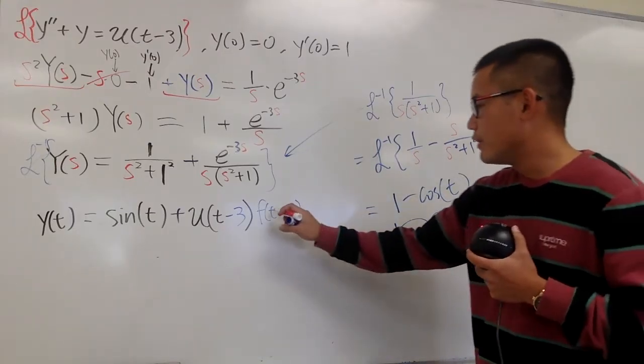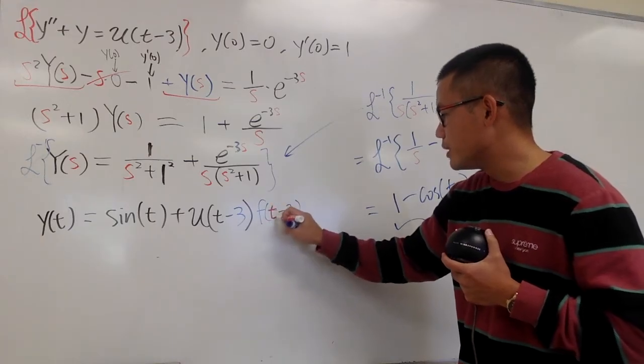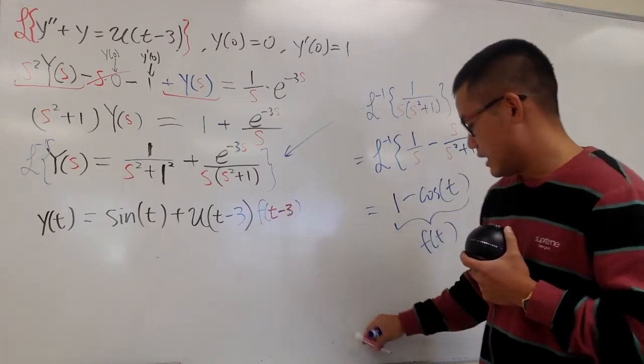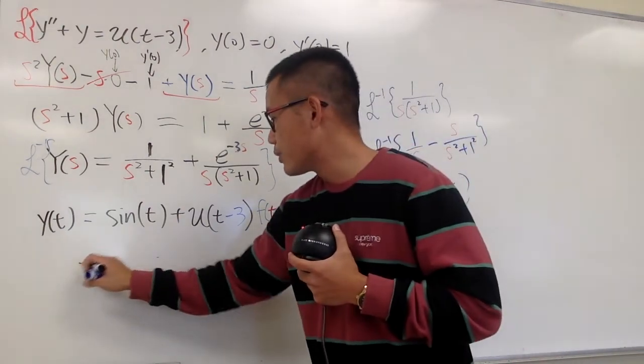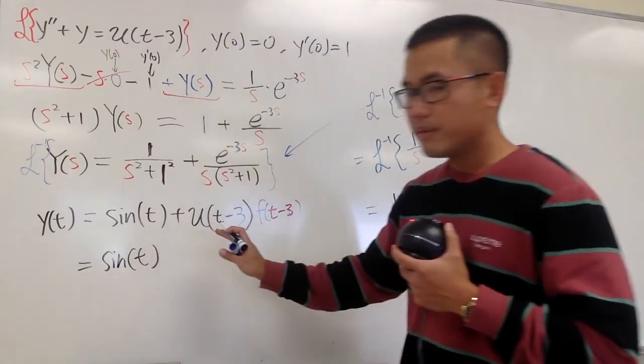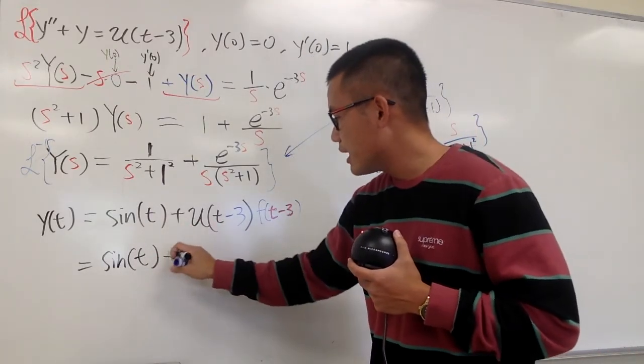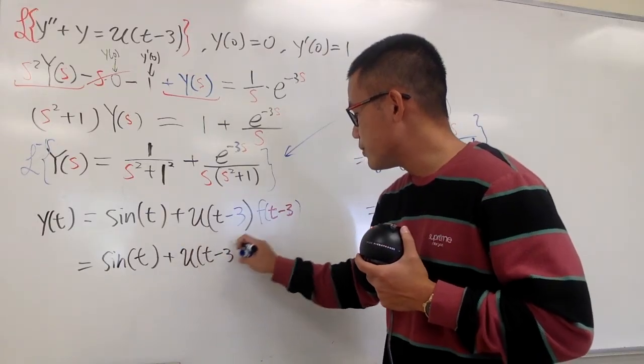So, to write this down legitimately, I will write this down as sine t by itself. This is like one term, the first term. And then, plus u of t minus 3, and I open the parentheses for the f of t minus 3.